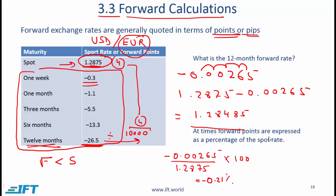At times forward points are expressed as a percentage of the spot rate, and you see that calculation here. The forward points 26.5 can be converted into this decimal, and as a percentage of 1.2875 that is approximately minus 0.21%.